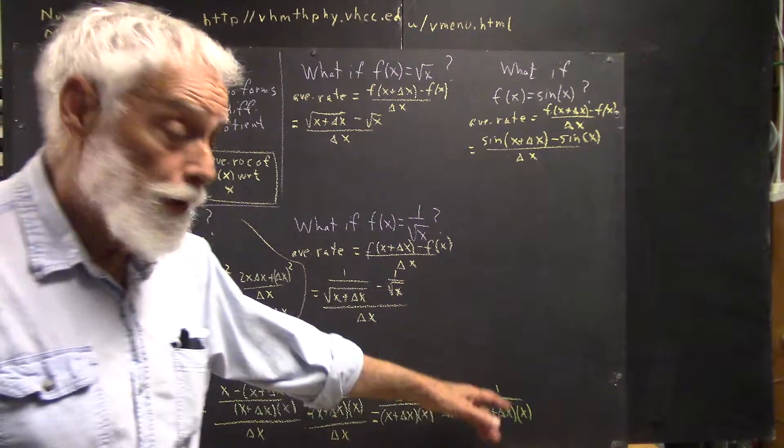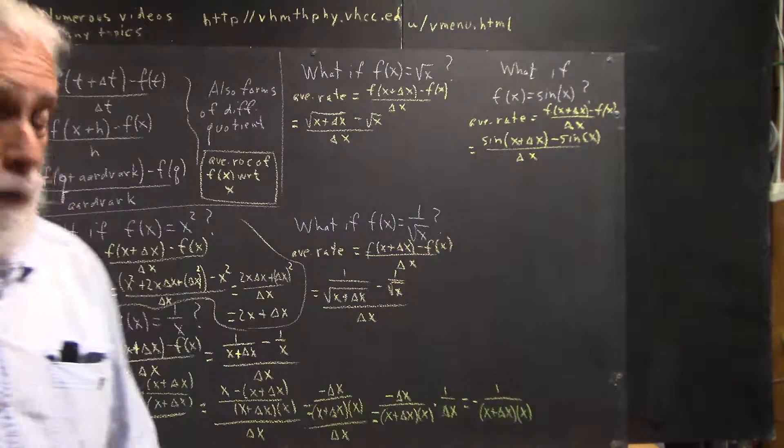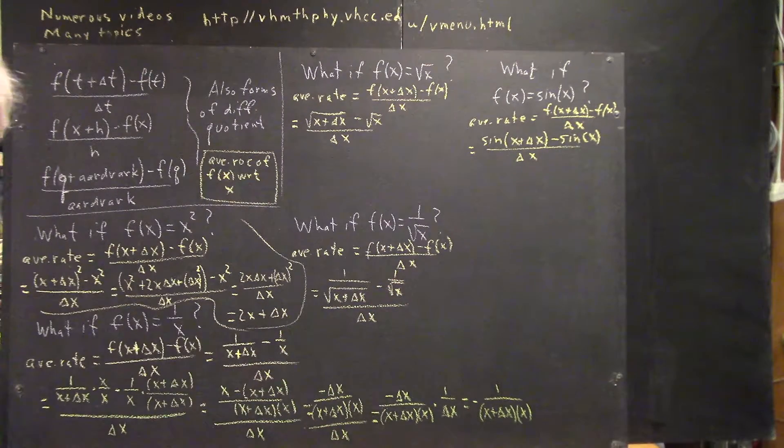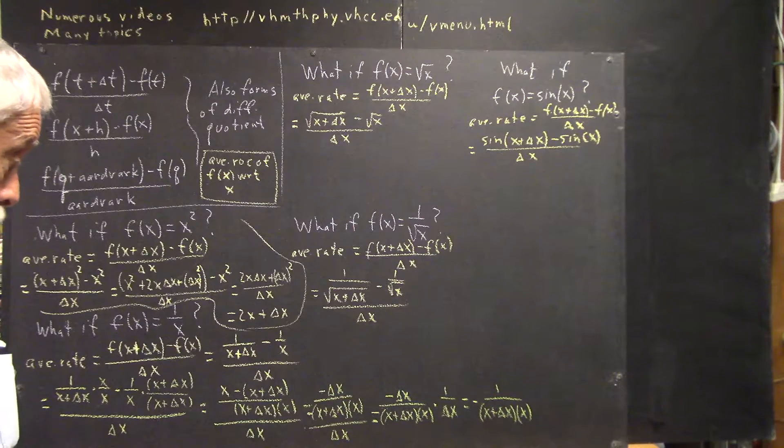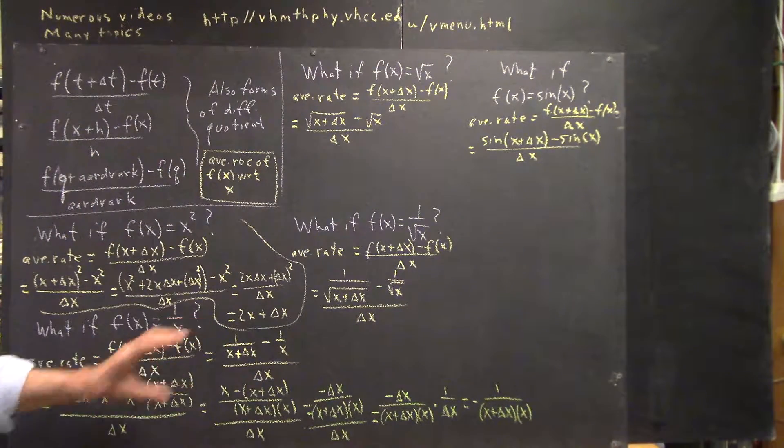Now, I could expand this to x squared plus x delta x. It wouldn't necessarily be harmful to do that, but it's going to turn out to be unnecessary, so I'm not going to. OK, so I've simplified this just using simple algebra steps.